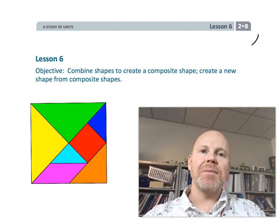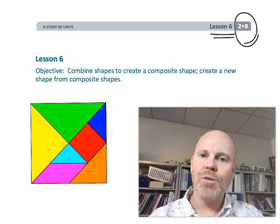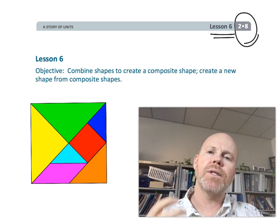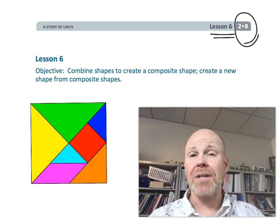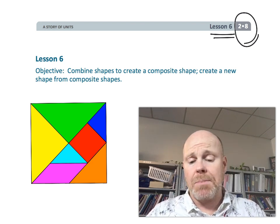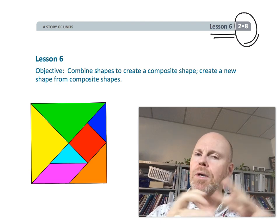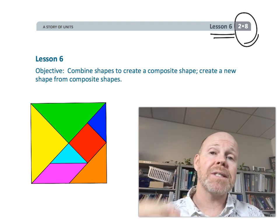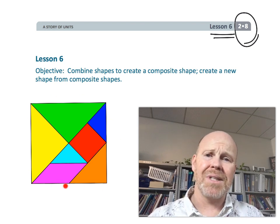All right, this is second grade, module 8, lesson 6. In this lesson, students are going to continue playing with shapes. They're going to continue using all of that academic vocabulary about the various attributes of all of these shapes, plus the names of the shapes—polygons, quadrilaterals, rectangles, etc. We're going to put it all together, and we're going to be using tangrams as our context. So let's get started.